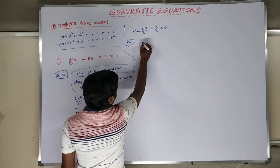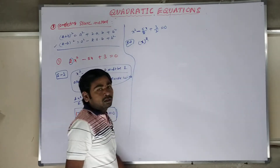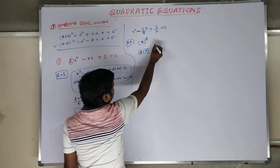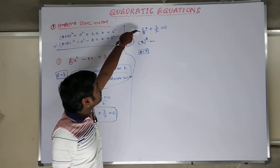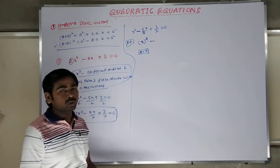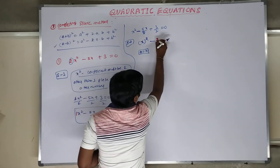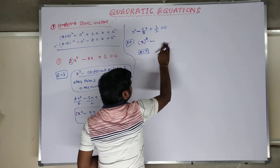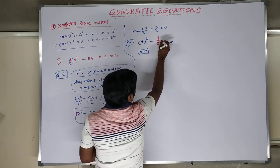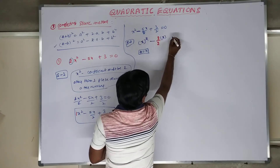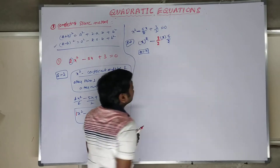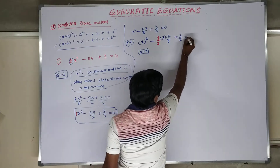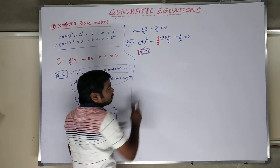Here we have x squared, which is A squared, so A equals x — that is fixed. Now, looking at the middle term: 2AB must equal 5x/2. Since A equals x, we have 2 into x into B equals 5x/2. Dividing and multiplying by 2, the left-out term other than 2 and A gives us B equals 5/4.